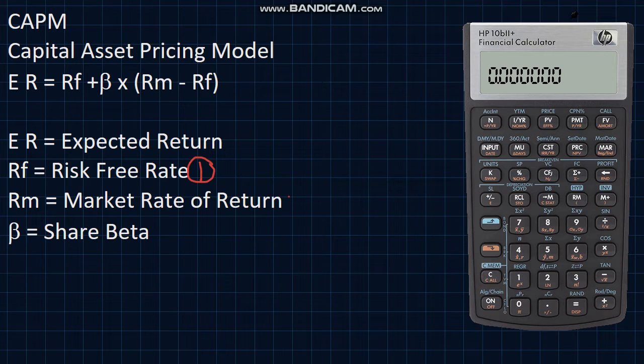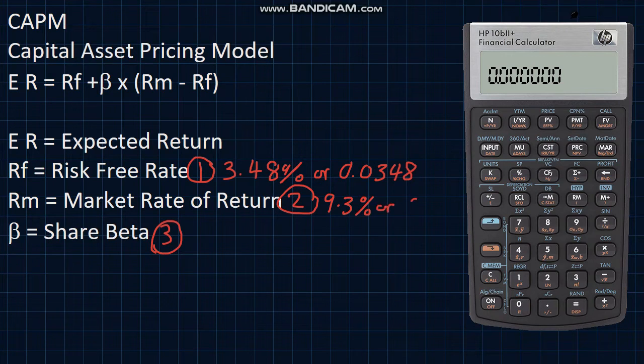The risk-free rate, the market rate of return, and the share beta. For the risk-free rate, we'll be using a value of 3.48% or 0.0348. For the market return, we're using 9.3% or 0.093. And for beta, we're going to use a value of 0.82.